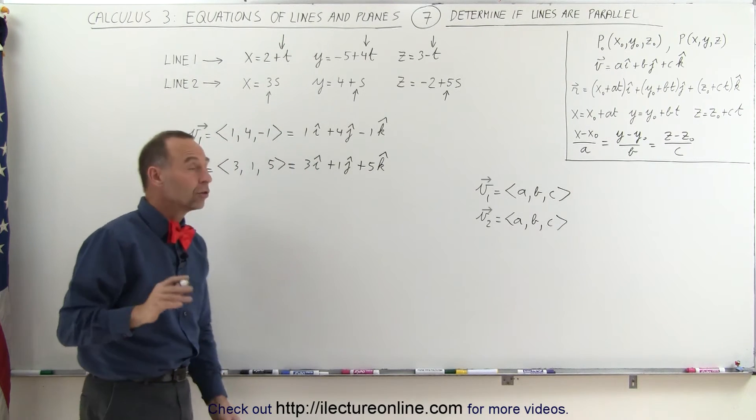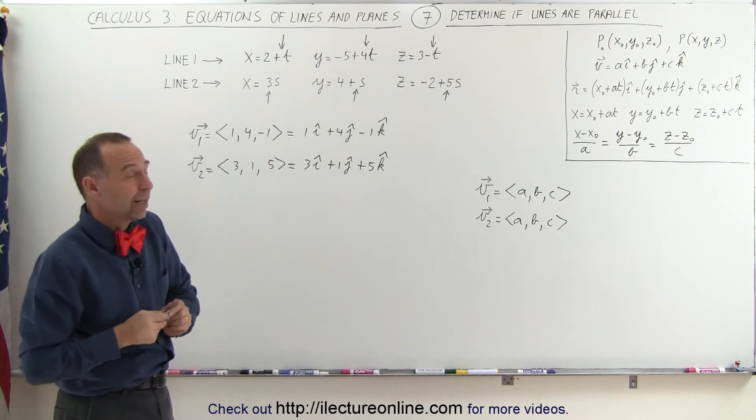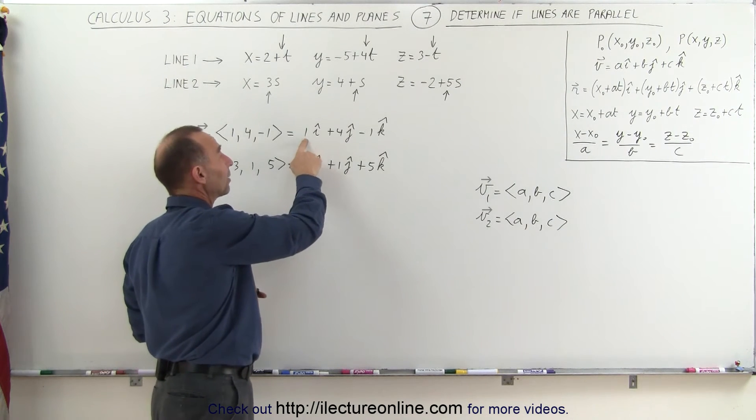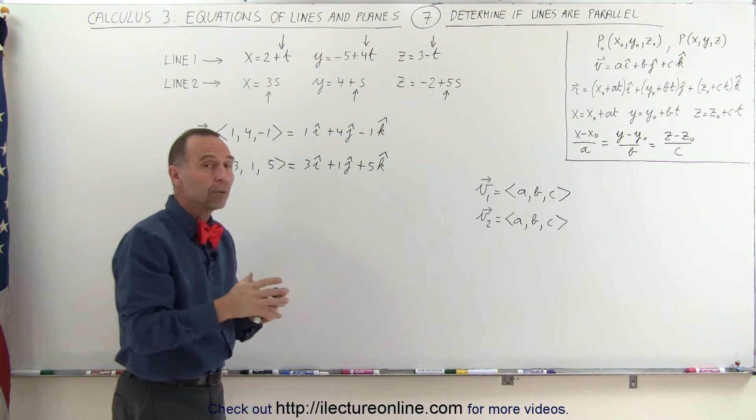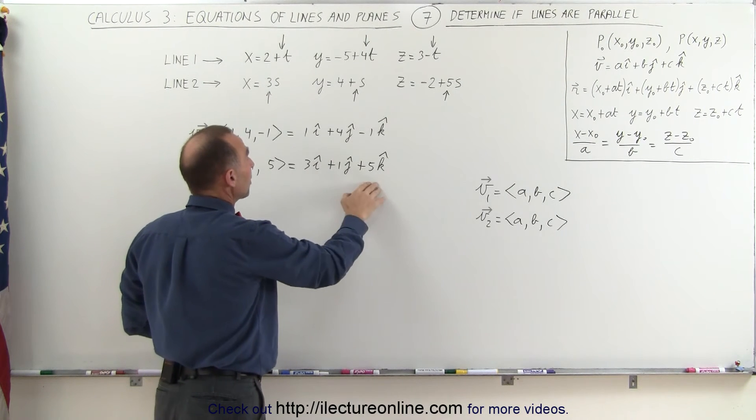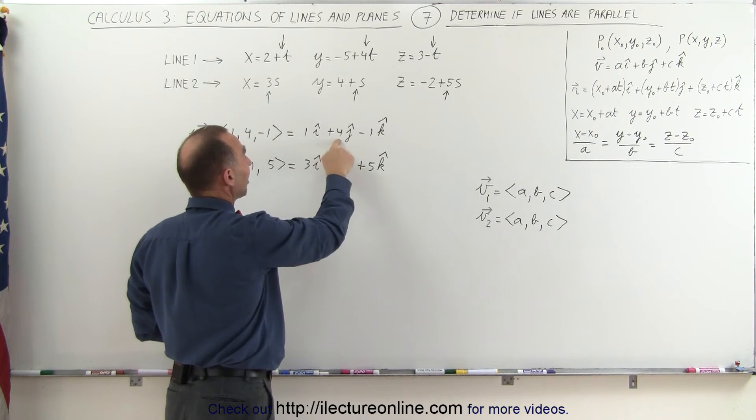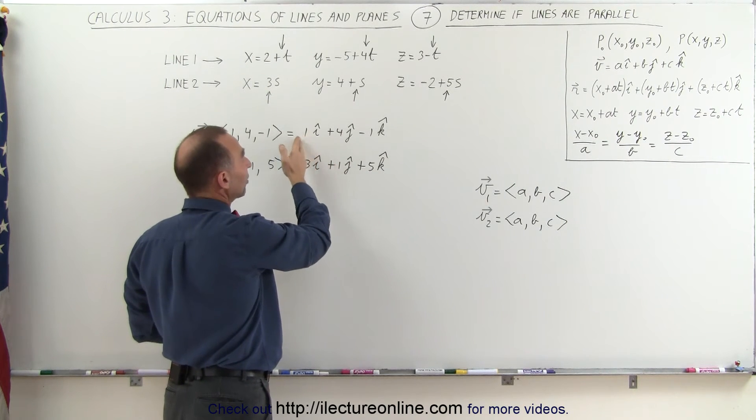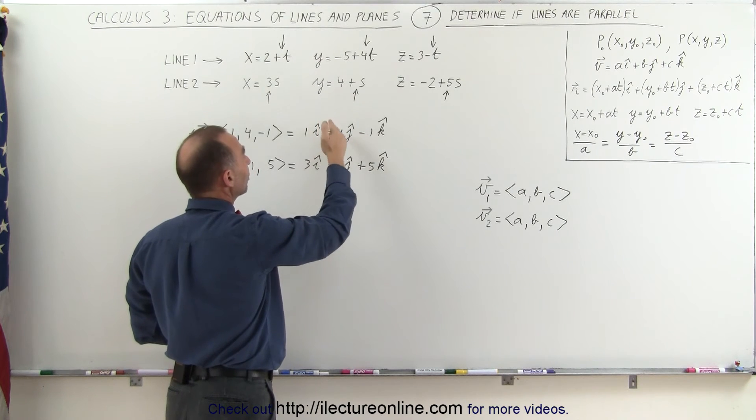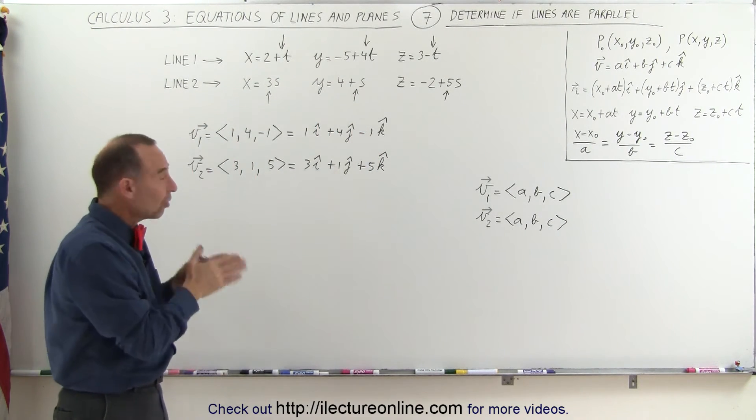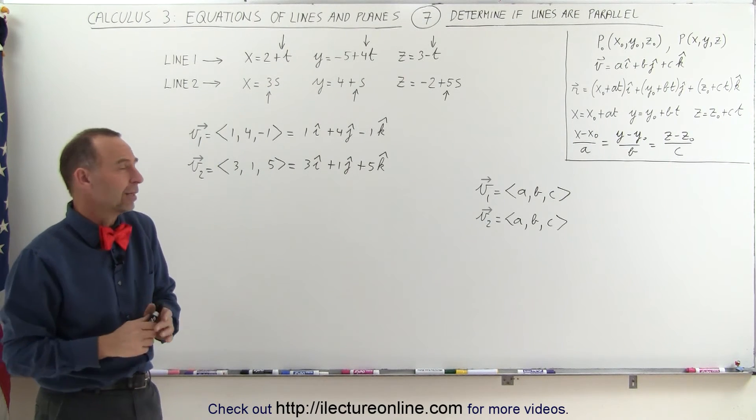Now all we have to do is look at those two vectors to see if they're parallel. They can only be parallel if the components—the X, Y, and Z components—are proportional to one another. In other words, if these vectors are going to be parallel, I need to have these as a multiple of this vector. For example, if I had 6, 2, and 10, or 9, 3, and 15, then we can see that yes, the components are proportional, therefore they're parallel.